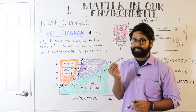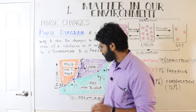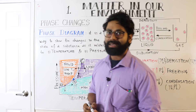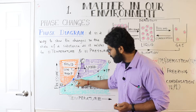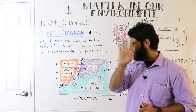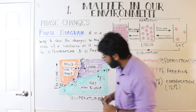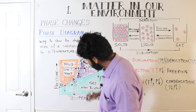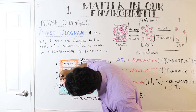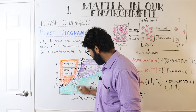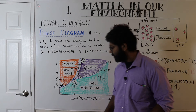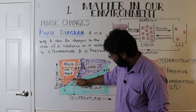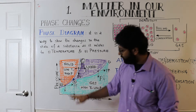Now, what about the B point? This B point is very special. At the B point, there is a fixed temperature and a fixed pressure. What is special about this B point is that at this point, solid, liquid, and gas all coexist.